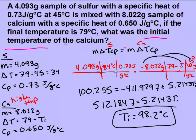In this case we did not have water in the problem at all — so you don't have to have water. Anytime you have two substances you'll be using this calorimetry equation. If you have one substance then you'll be using the simpler equation: q equals mΔTCp. Anytime you're looking for temperature you will need to distribute. If you're looking for final temperature you'll distribute on both sides; if you're looking for initial temperature you'll only have to distribute on one side.